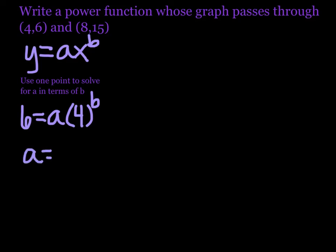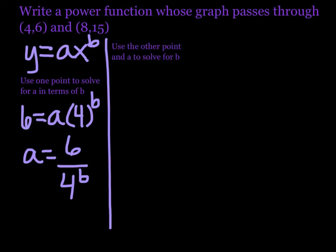And so we need to solve for a. That means that a is going to be 6 divided by 4 to the b, which looks complicated right now, but just hang on to it because now we're going to use the other point and our a to solve for b. So the other point, 15, equals, and then the a is 6 over 4^b times 8^b.